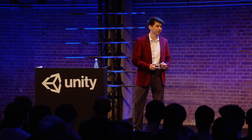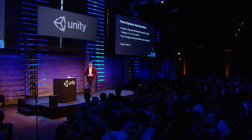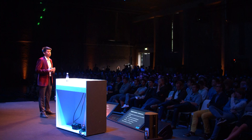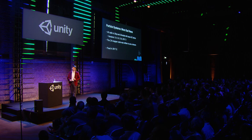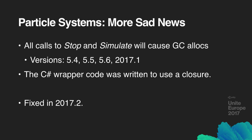There is one other thing about particle systems that might make you sad. When working with Unity, we often want to drive our GC allocs down to zero. As of Unity 5.4, we introduced a problem into a couple of particle system APIs: if you call Stop or Simulate, we will allocate a small amount of memory — even if the particle system is already stopped. This is because most Unity APIs are C# wrapper functions, and in particle systems' case they wrap internal C# functions. In 5.4 through 2017.1, we introduced a closure, and when you close over a local variable we must allocate a reference on the heap. This will be fixed — it is already fixed in 2017.2.